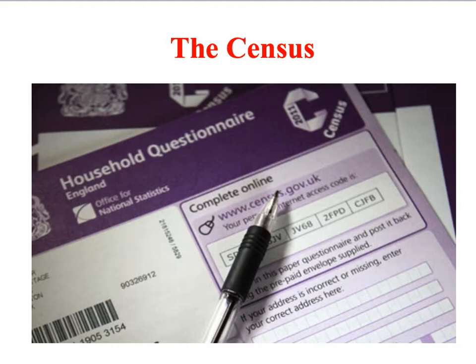The census is sent to every household in the UK every 10 years and must be filled in by law. It deals with various questions that help the government to plan for the future, asking people questions about things like their family structure, their occupation, their religion, their ethnicity, and so on.